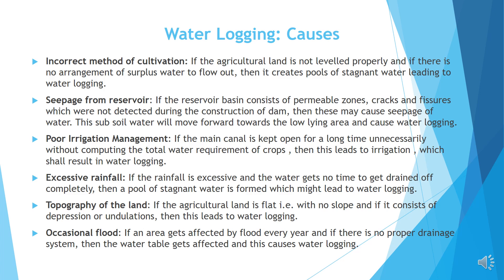Poor irrigation management: If the main canal is kept open for a long time unnecessarily without computing the total water requirement of crops, then this leads to over-irrigation which shall result in waterlogging. Excessive rainfall: If the rainfall is excessive and the water gets no time to drain off completely, then a pool of stagnant water is formed which might lead to waterlogging. Topography of the land: If the agricultural land is flat with no slope and consists of depressions or undulations, this leads to waterlogging. Occasional flood: If an area gets affected by flood every year and there is no proper drainage system, then the water table gets affected and this causes waterlogging.